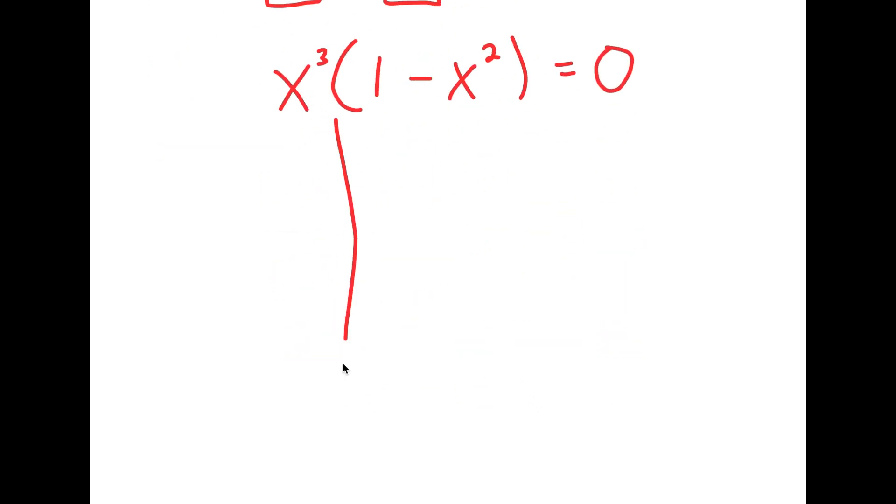So now this gives me two equations. I get x to the power of 3 is equal to 0 and 1 minus x squared is equal to 0. So for x to the power of 3 equals 0, x is equal to 0.